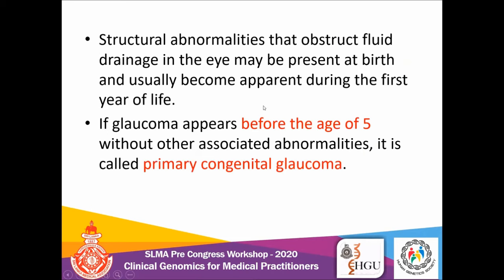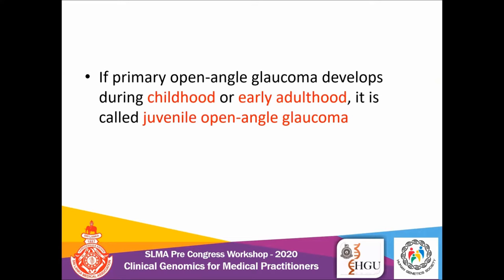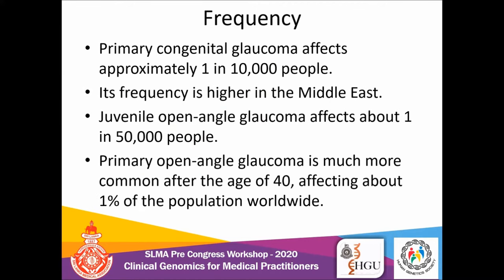When we talk about early onset glaucoma occurring without any associated abnormalities in the body before the age of five years, we call it primary congenital glaucoma. If it occurs in childhood or early adulthood, we call it juvenile open angle glaucoma. The frequency of primary congenital glaucoma is 1 in 10,000, mainly concentrated in Middle East countries. Juvenile open angle glaucoma is around 1 in 50,000, while open angle glaucoma occurring after age 40 affects around 1% of the world population.